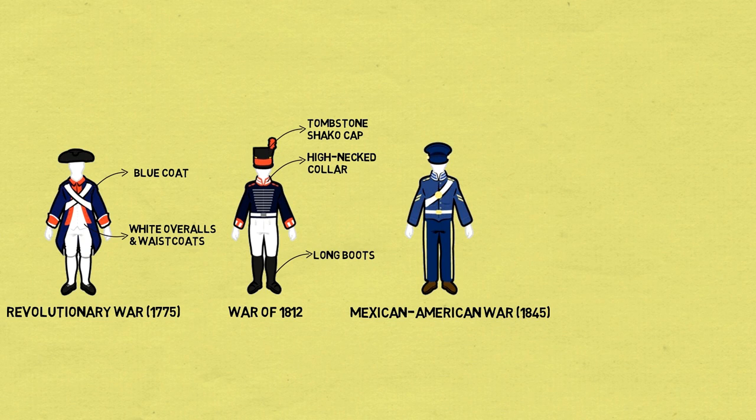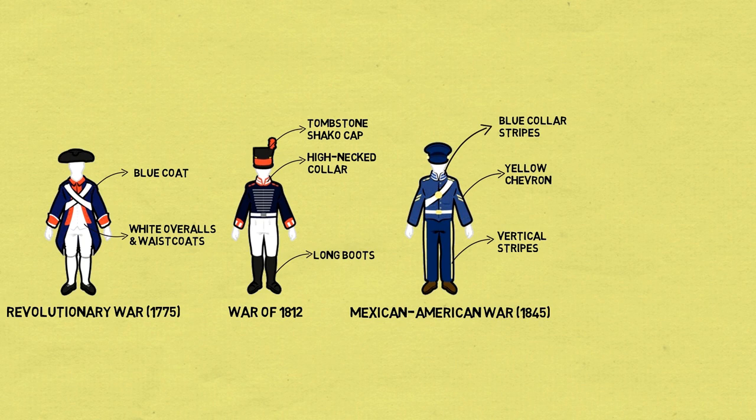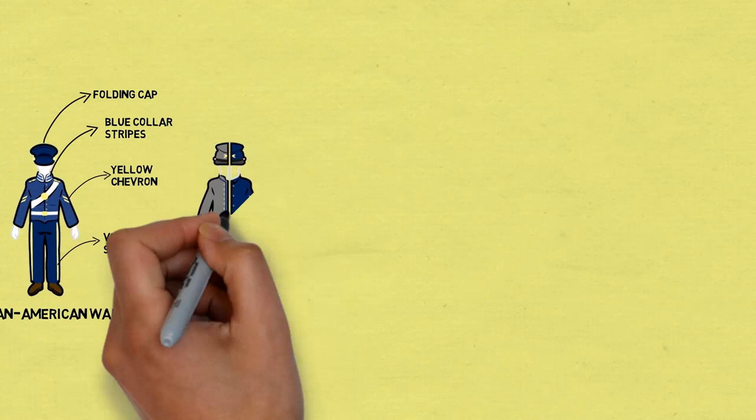Mexican-American War 1845: The US Army featured another set of changes where soldiers began wearing roundabouts, which were made of blue wool. The pants would feature vertical stripes and chevrons on their sleeves in yellow that would mark their ranks. They replaced tombstone caps with forage folding caps.